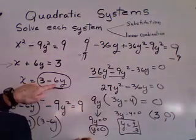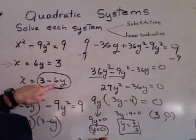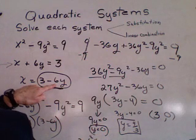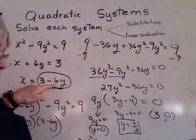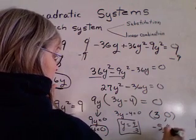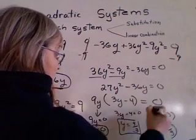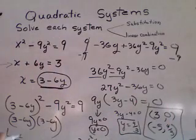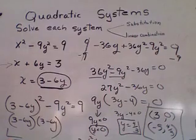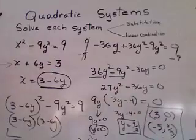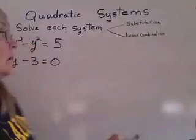And another one is y is 4 thirds. So, if I put 4 thirds in there, 3 minus 6 times 4 thirds, that's pretty easy, too. 3 minus 8, what is 3 minus 8? Negative 5 pairs with 4 thirds. So, that is the solution, the two points where these graphs cross. Algebraically, you get the exact answer here, as long as you don't do an arithmetic error.